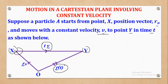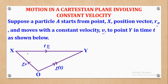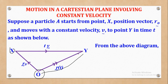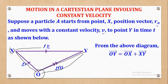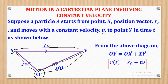OY can also be called the displacement vector from the origin. XY is the displacement vector from the initial position X, while OY is the displacement vector from the origin — you have to be keen about where it is starting from. From the diagram, OY equals OX plus XY. Representing that with symbols gives the equation: Rt equals R0 plus T times velocity. This is the equation showing the path taken by a body moving with constant velocity and will be used frequently in this video.